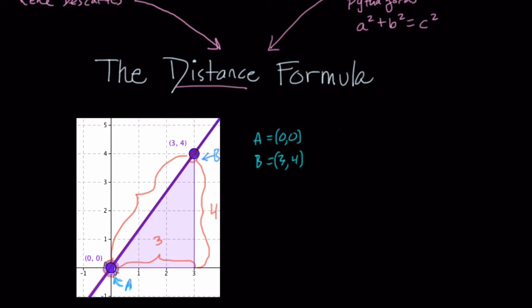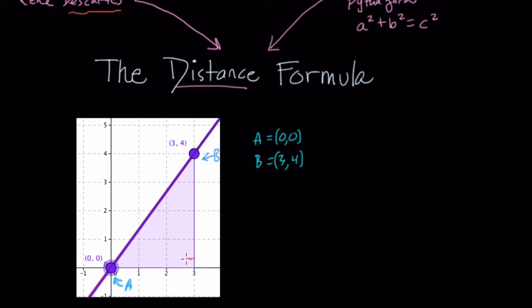And you can see what I'm talking about. Here is our right triangle — that's where the Pythagorean theorem comes into play. We have a right triangle on a coordinate plane, on a Cartesian plane. Our right triangle is set up with two legs: this leg is four and this leg is three.